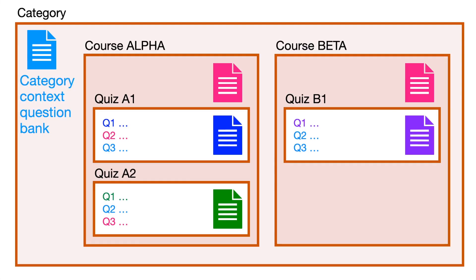To sum up: when you create a quiz on a Moodle course, in the background Moodle creates two blank question banks — one at quiz level and one at course level. Questions at course level can be used by any child quiz within the course. We also discovered there is a category context question bank, and questions in this category context question bank can be used on many courses and many quizzes within the category.